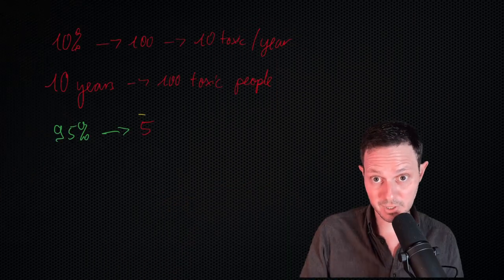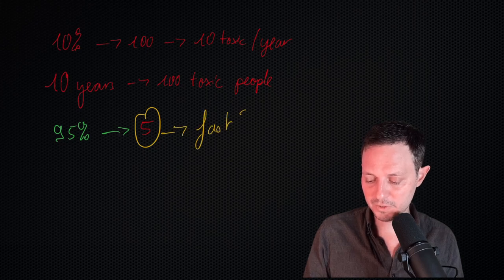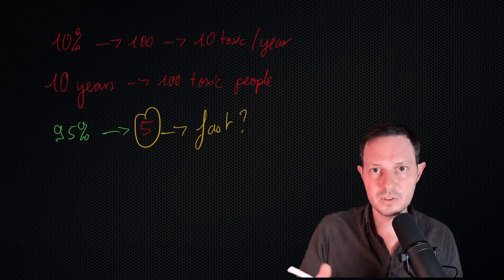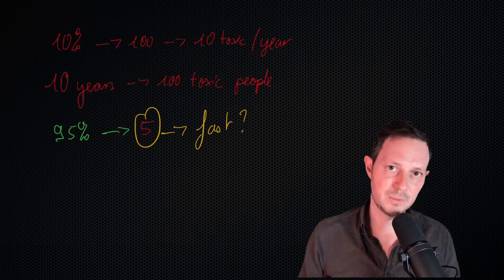Now, five toxic people over the course of 10 years is only one every two years, and that's enough to reap absolute havoc. The real question here for us is how fast is it easy for us to detect these people? Because the faster we can detect them, the quicker we can eliminate them.